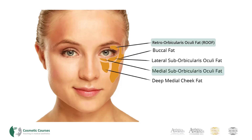The medial suborbicularis oculi fat, or medial SOOF, lies along the orbital rim, inferiorly to the orbicularis retaining ligament and under the orbicularis oculi muscle. The lateral suborbicularis oculi fat, or lateral SOOF, is located at the lateral side of the orbital rim and lies above the prominence of the zygoma.